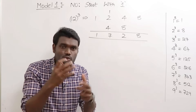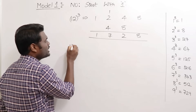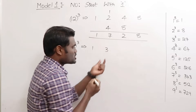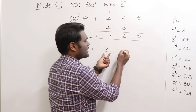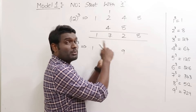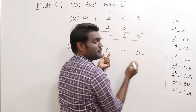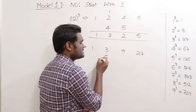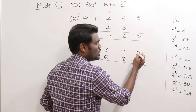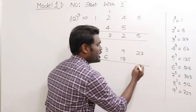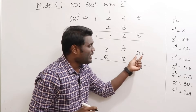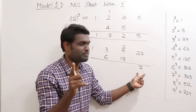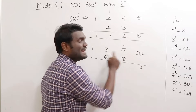Let's look at another example: 13 cubed. Follow the same procedure — write the digits 1 and 3. Square of the second number: 3 squared is 9. Cube of the second number: 3 cubed is 27. Leave first and last, double the middle: double 3 is 6, double 9 is 18. Adding: 27 plus 0 gives 27 — write 7, carry 2; 18 plus 2 is 20, plus 9 is 29 — write 9, carry 2.